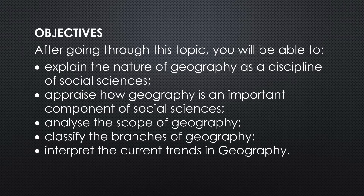Let us see the objectives. After going through this topic, you will be able to: explain the nature of geography and geography as a discipline of social science; appraise how geography is an important component of social science; analyze the scope of geography; classify the branches of geography and interpret the current trends in geography.